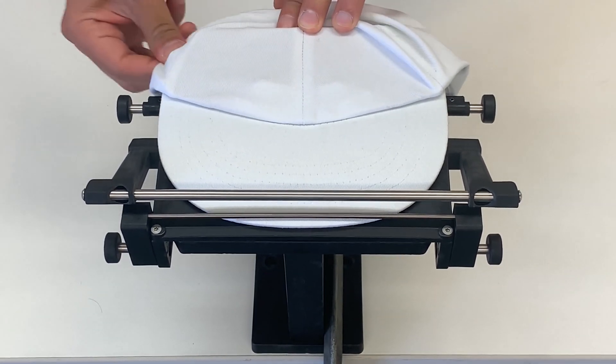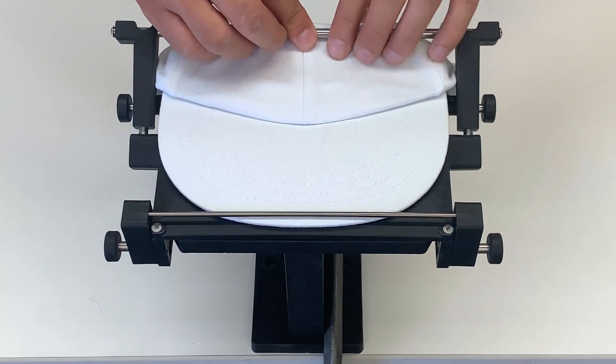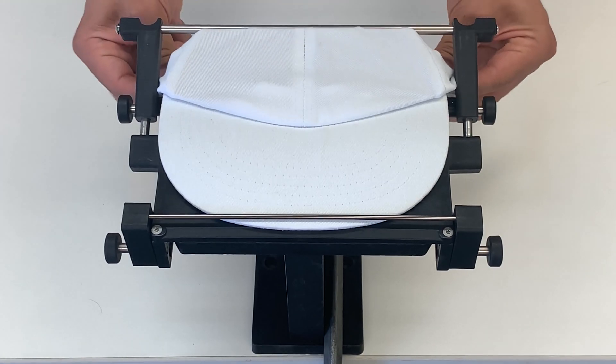Now you want to primarily focus on the print surface area. Once that's nice and smoothed out, engage the locking bar and give one last tug on each side.